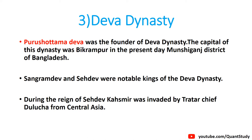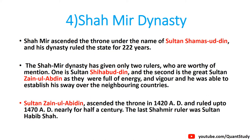Sahadev was a notable king of Kashmir. Next is the Shahamir Dynasty. The Shahamir dynasty ruled Kashmir for a long period. They started with Sultan Shamsiuddin and ended with Sultan Habib Shah.